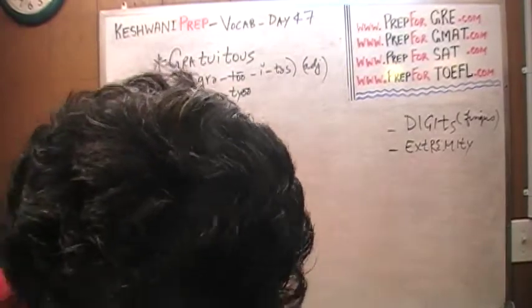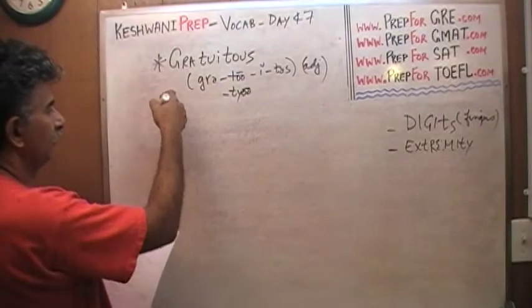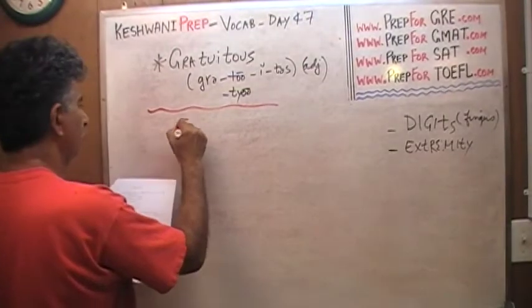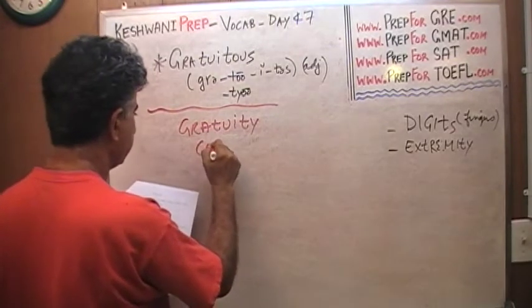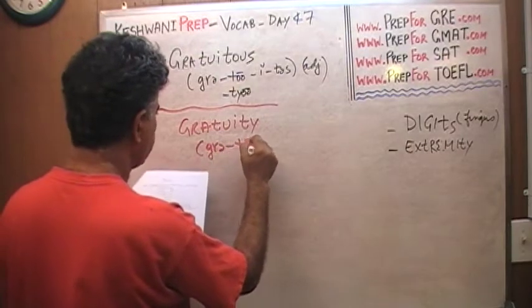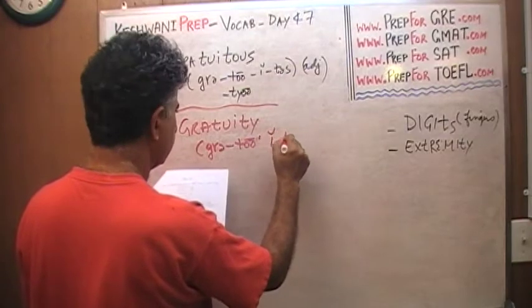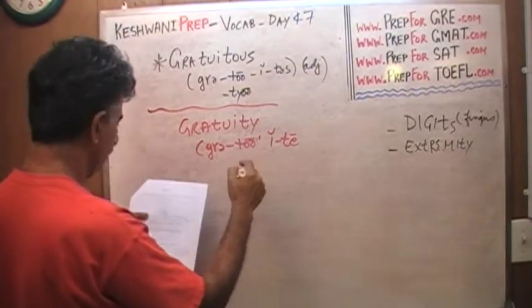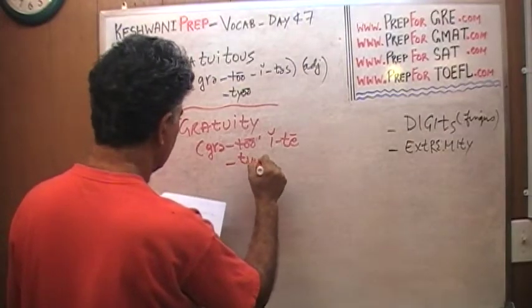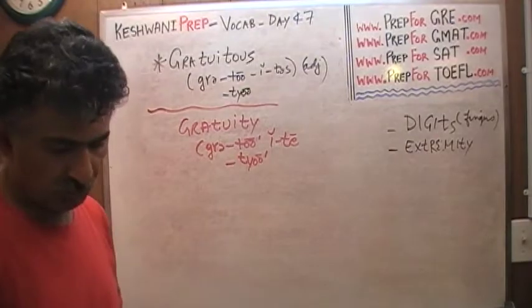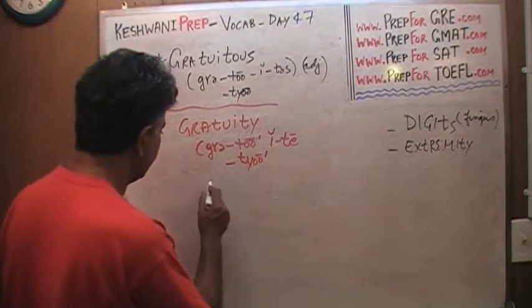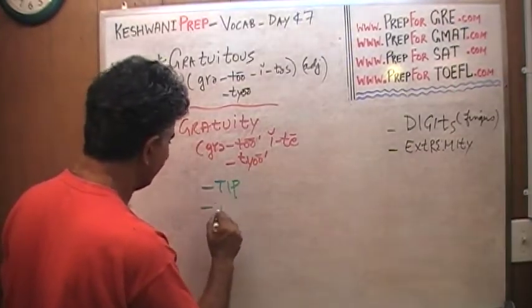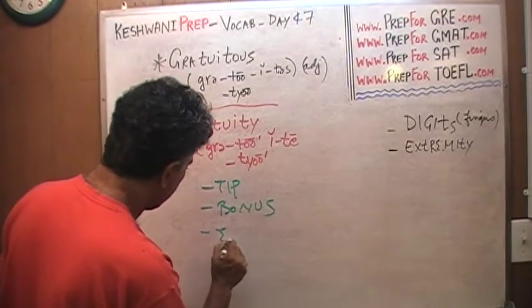The next word that we want to learn is gratuity, G-R-A-T-U-I-T-Y. It can be pronounced gratuity or gratuity, either way is fine. What does it mean? A gratuity is simply a tip that you leave for a waiter. A tip, a bonus, extra payment.